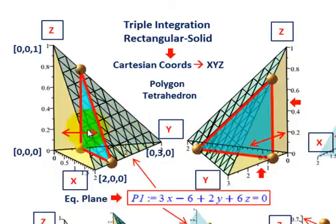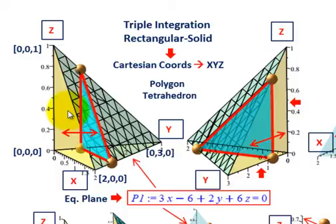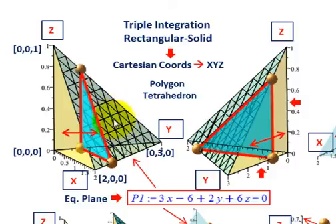What we're going to be looking at is taking our integration and slicing along our y-axis. This slice sits on the x-z plane on one side, and the line on the other side sits on the x-y plane. The hypotenuse is following the face of the tetrahedron. So we're integrating by taking our slice along the y-axis against our rectangular solid.